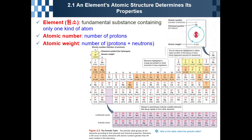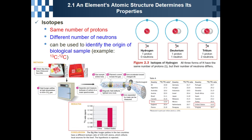Since this is not a chemistry class, we don't have to memorize all the elements, but we do need to know atomic number and atomic weight. Next, we need to know the concept of isotope — in Korean, 동위원소 (dong-wi-won-so). Hydrogen has three isotopes.